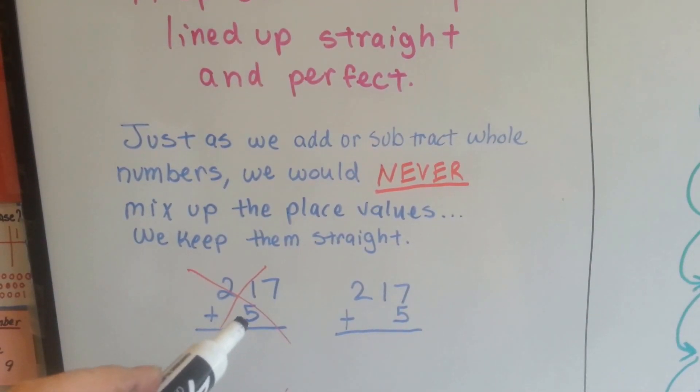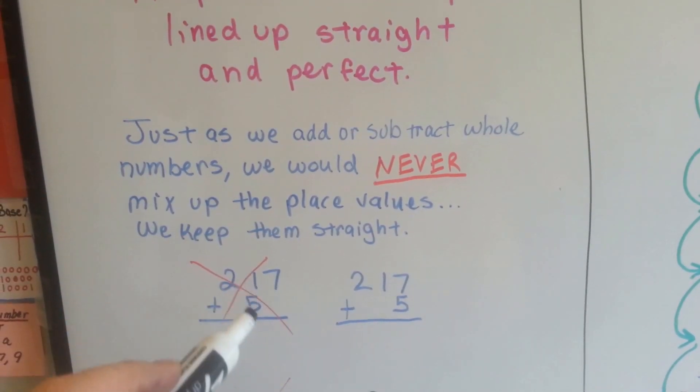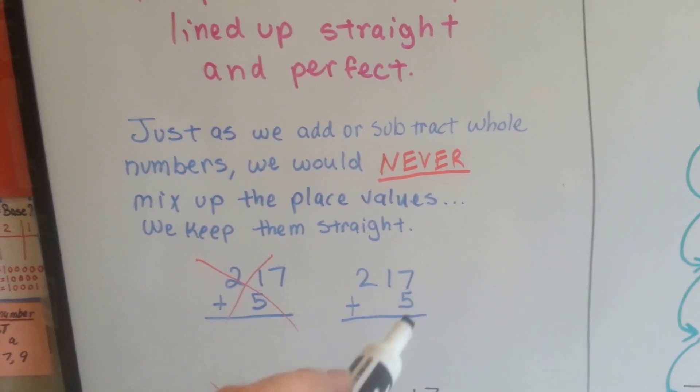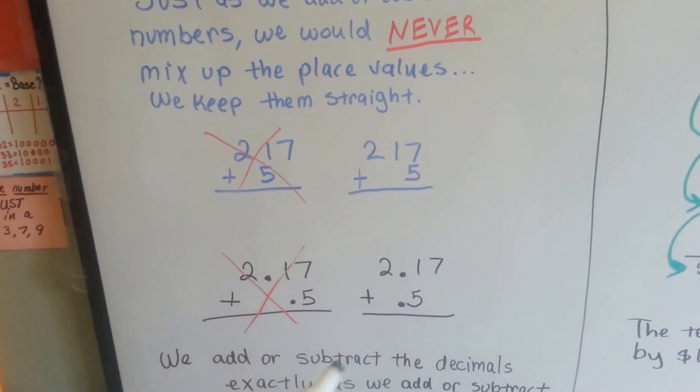If we added 5 to 217, we wouldn't put it under the tens place. We'd put it under the ones place. We keep our place values straight.